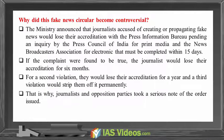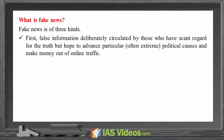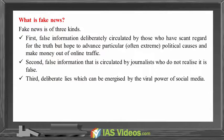That is why journalists and opposition parties took a serious note of the order issued. Fake news is of three kinds. First, false information deliberately circulated by those who have scant regard for the truth but hope to advance particular political causes and make money out of online traffic. Second, false information circulated by journalists who do not realize it was false. Third, deliberate lies which can be energized by the viral power of social media.